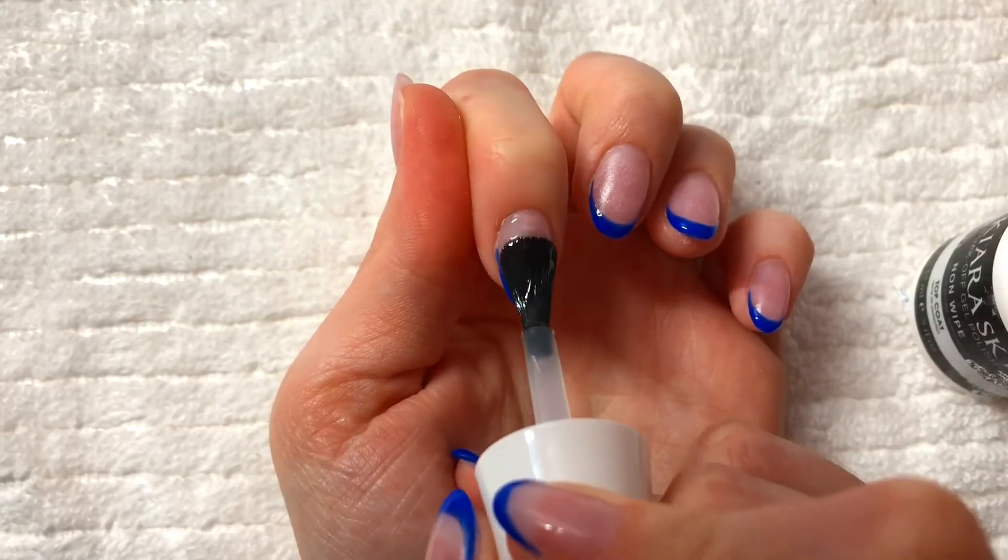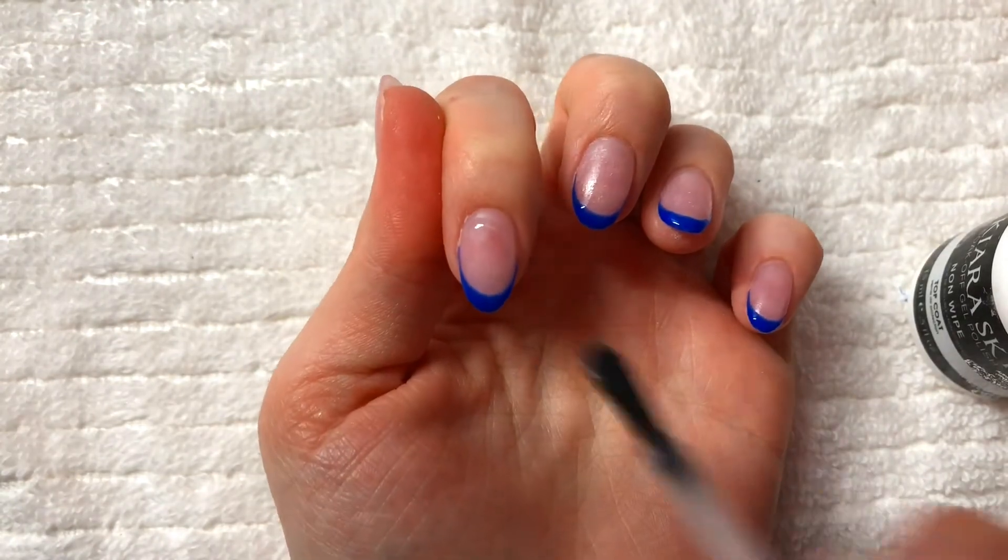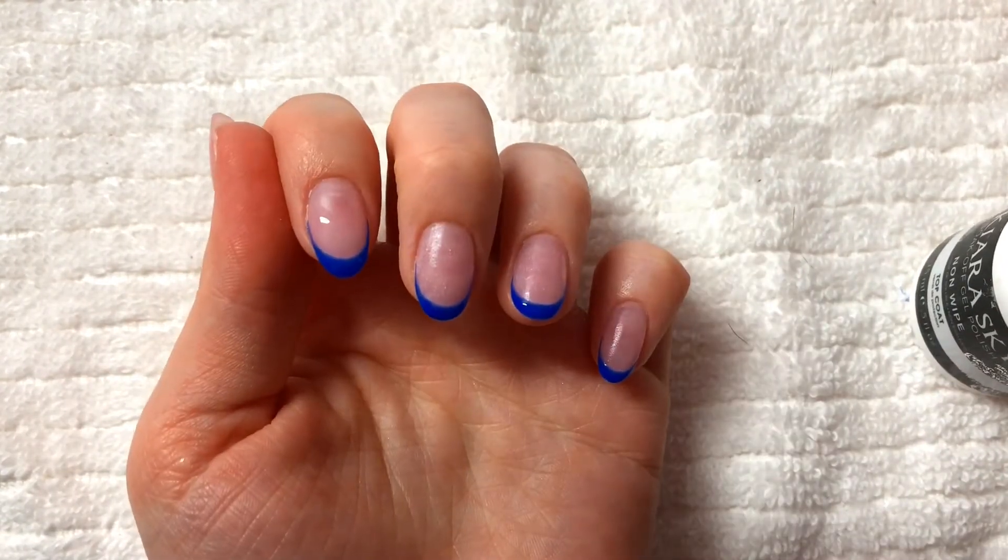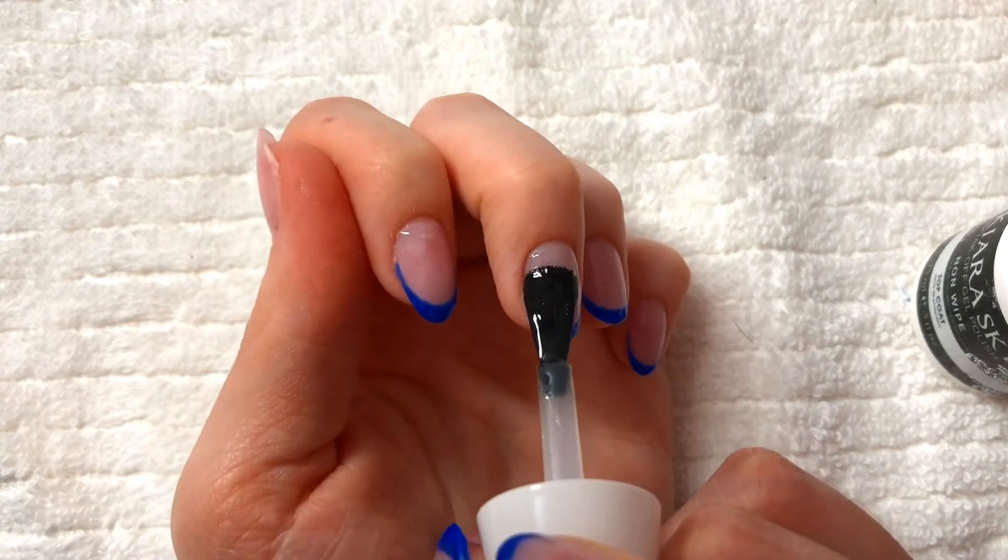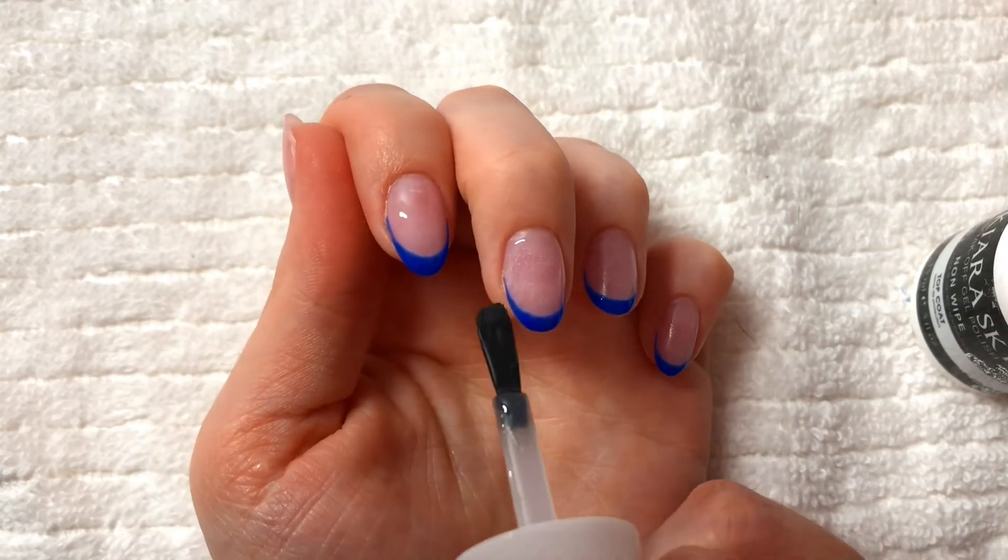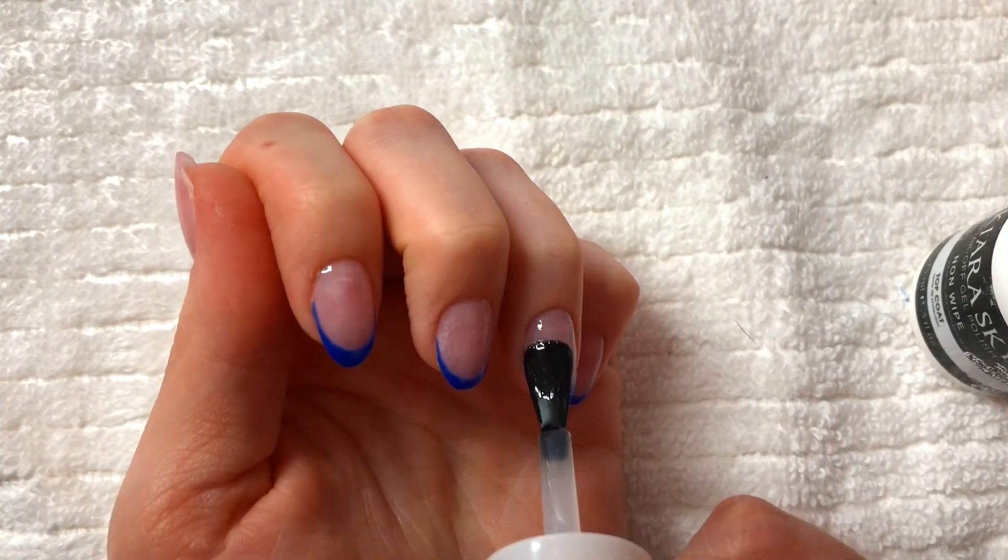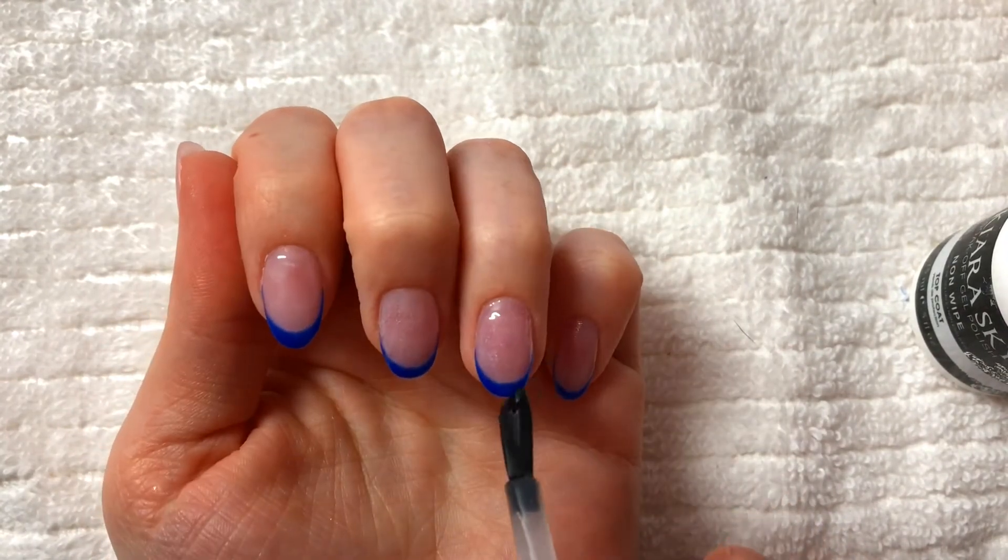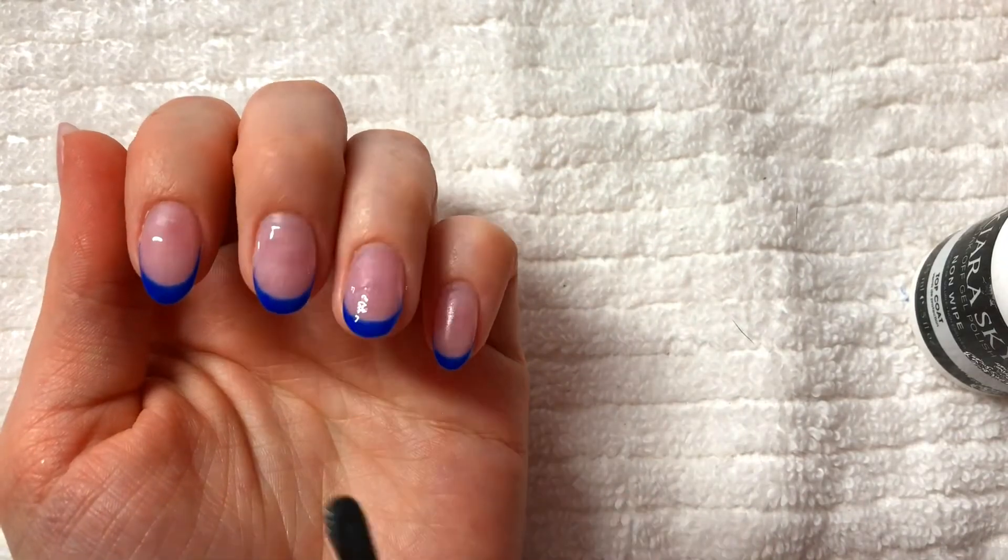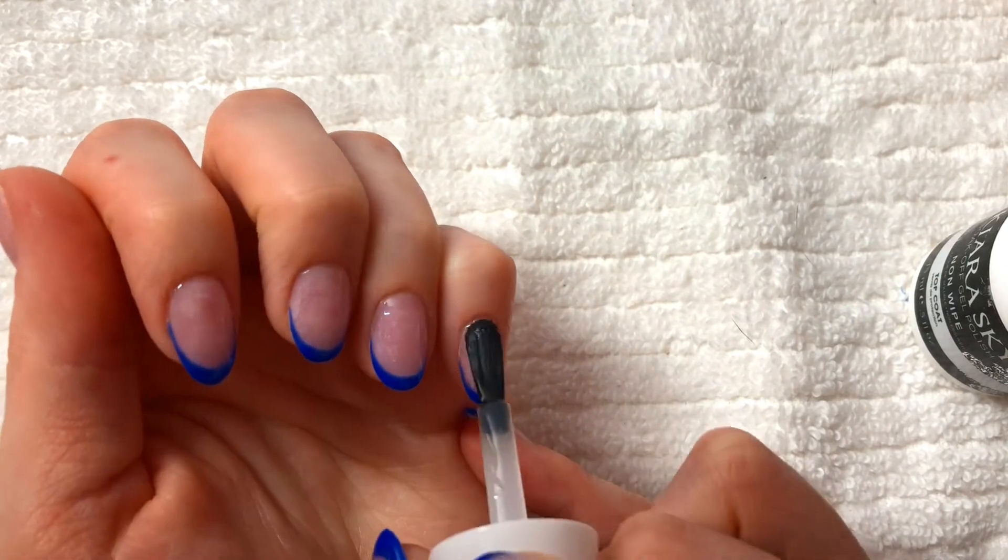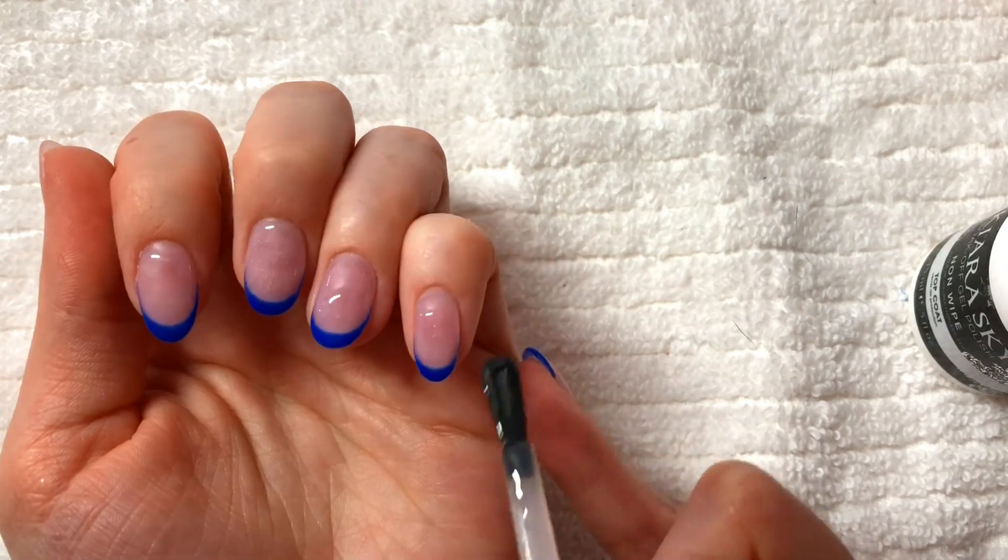After you've cleaned all the dust off of your nails, you want to go in with your top coat. Now, as you can see, I went ahead and did a royal blue French tip. I just decided that I wanted to do something a little fun, but if you just applied a regular colored dip powder, then all you have to do is just apply your top coat. The top coat that I am using is a gel top coat, but you can use whatever top coat that you want.